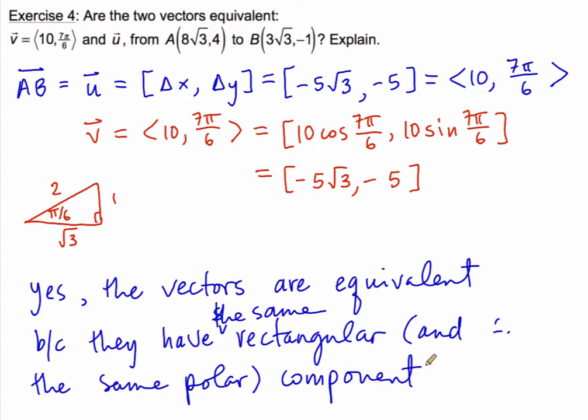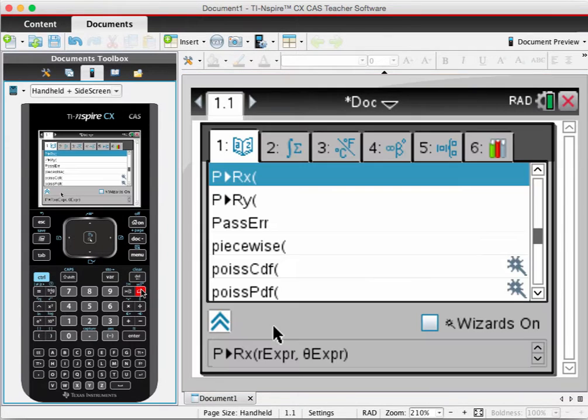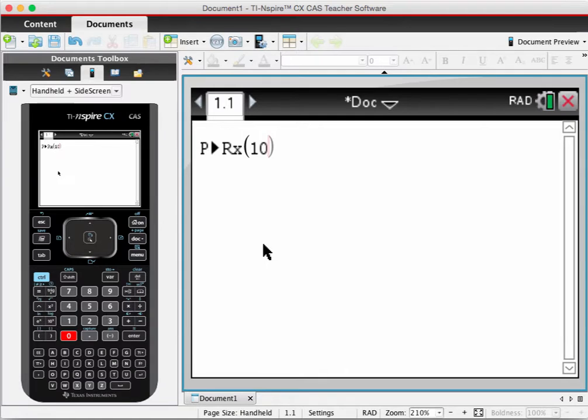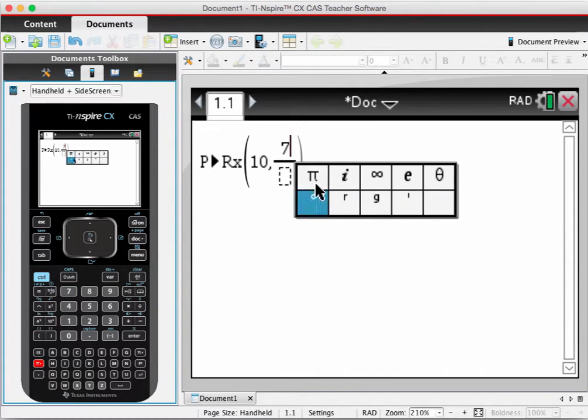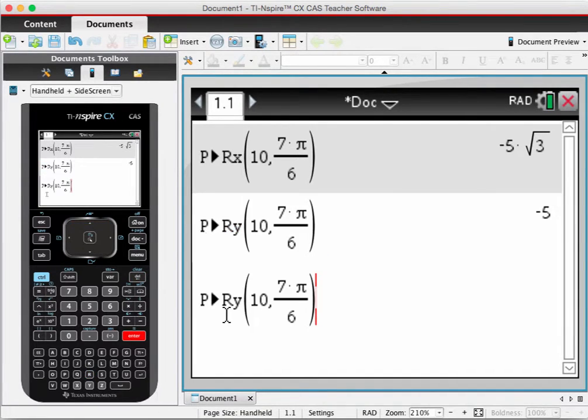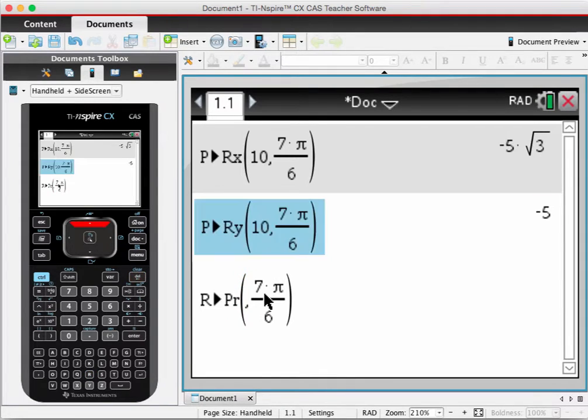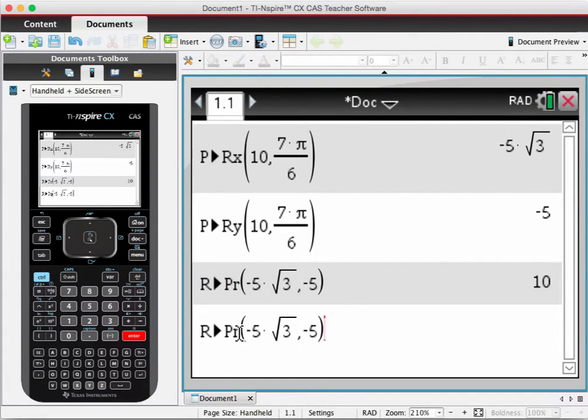Again you can use some technology to check here and if we just briefly look at the TI inspire using the polar to rectangular component conversion we can take our polar magnitude and our angle of 7 pi by 6 and then we can work one at a time to get the horizontal and the vertical component. And then if we work backwards from rectangular to polar we are going to get the magnitude first and then the angle.